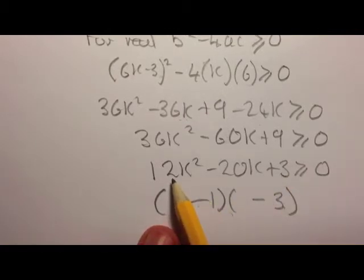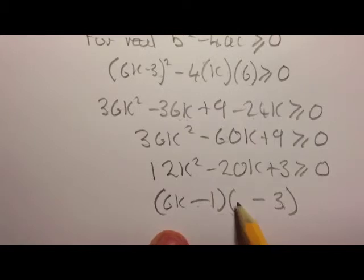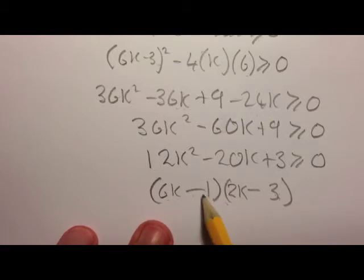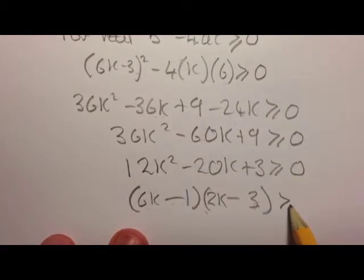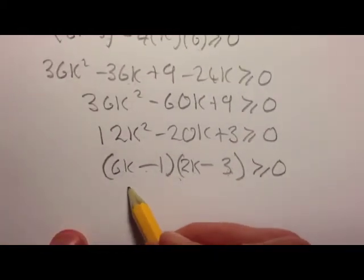And for 12, we could have 6 and 2. 6 and 2 is quite good because 6 times 3 gives me 18. So I'm going to put 6k there and 2k here. Checking it backwards: it gives me 12k squared minus 2k minus 18k, so minus 20k plus 3. All good, greater than or equal to 0.